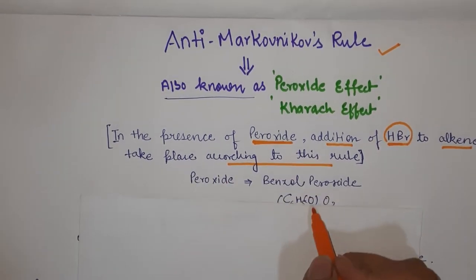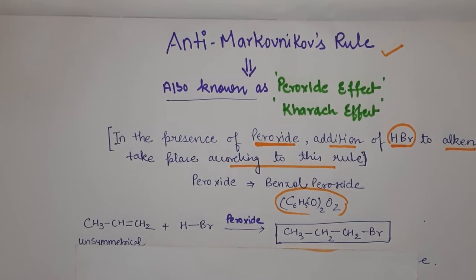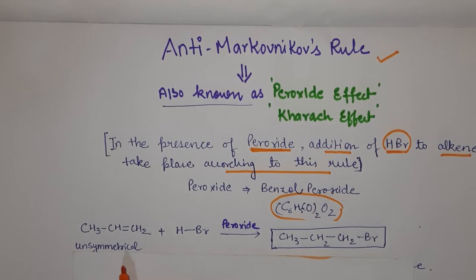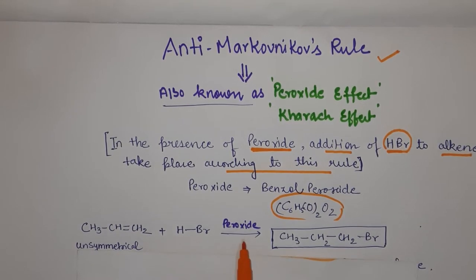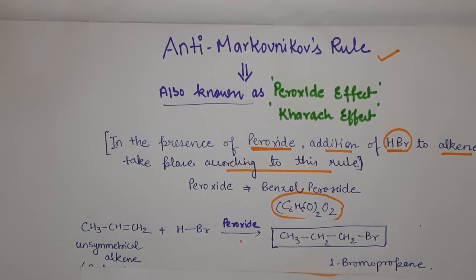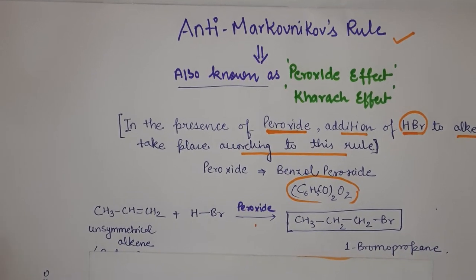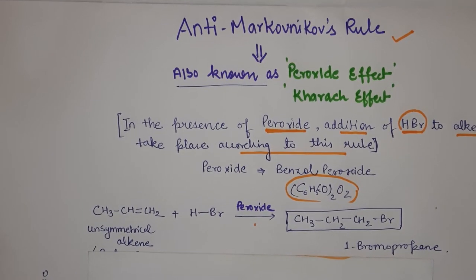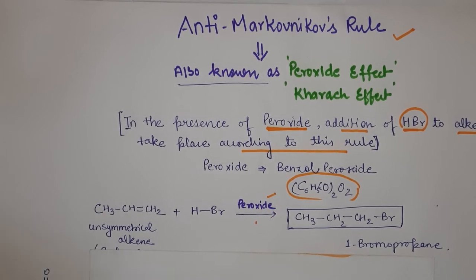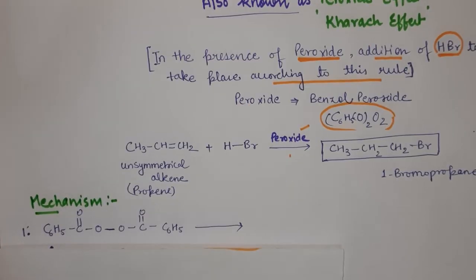Here the peroxide is benzoyl peroxide, C6H5CO2. The reaction is when the unsymmetrical alkene, CH3-CH=CH2, is reacting with HBr in the presence of peroxide, we are getting 1-bromopropane. Now why this product is stable in this case in the presence of peroxide, we need to discuss. So let's discuss the mechanism part.